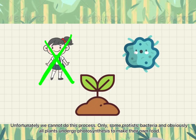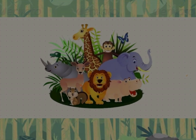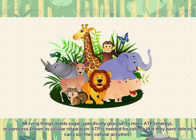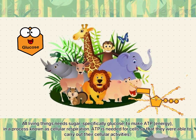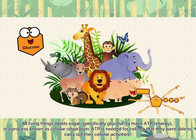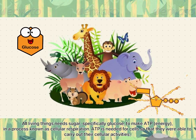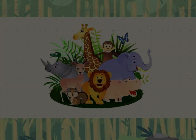Unfortunately, we cannot do this process. Only some protists, bacteria, and obviously all plants undergo photosynthesis to make their own food. All living things need sugar, specifically glucose, to make ATP as energy in the process known as cellular respiration. ATP is needed for cells so that they are able to carry out their cellular activities.